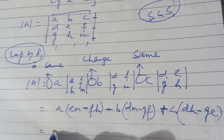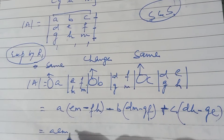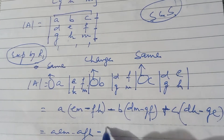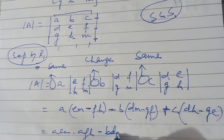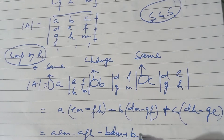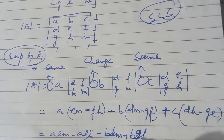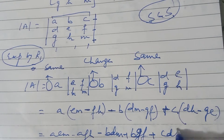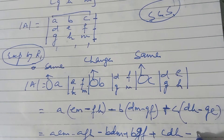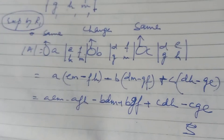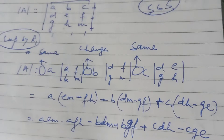So the full expanded result for expanding by Row 1 is: A·E·M minus A·F·H, minus B·D·M plus B·G·F, plus C·D·H minus C·G·E. You expand and you get the final answer. This is the result of expanding the 3x3 determinant along the first row.